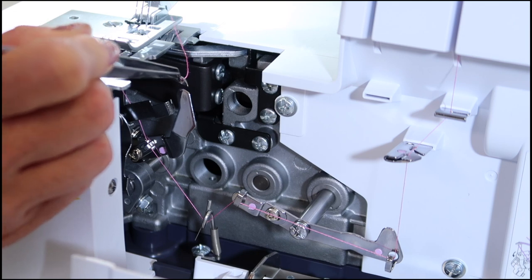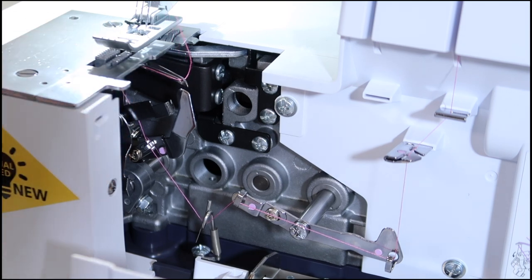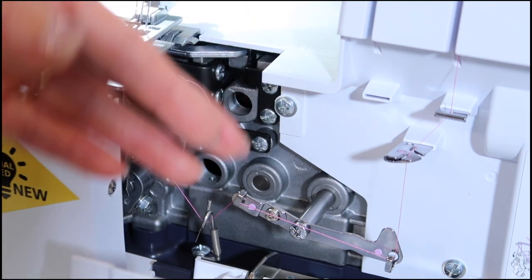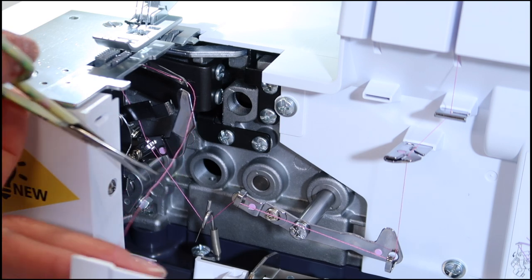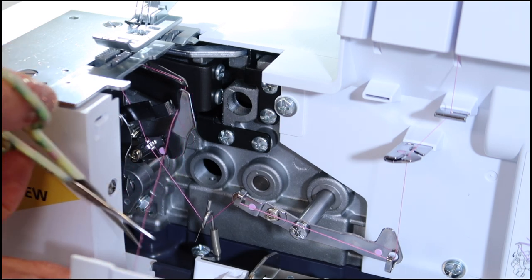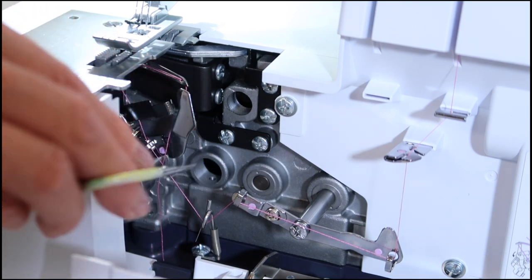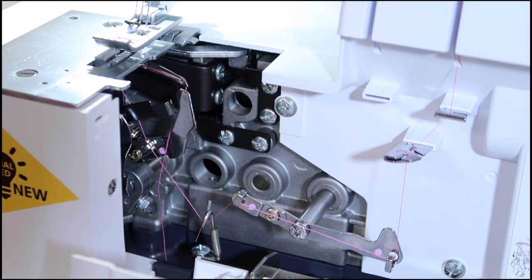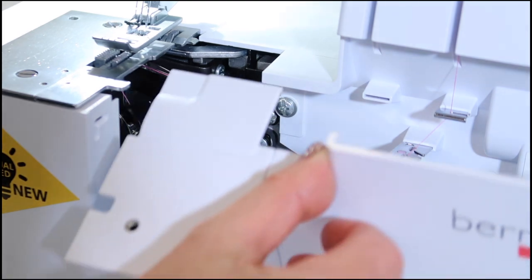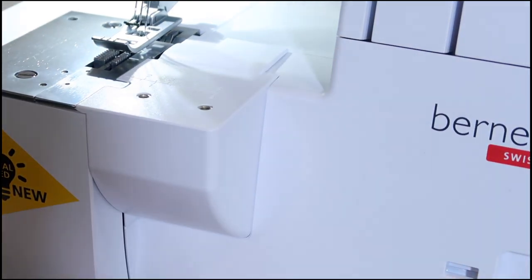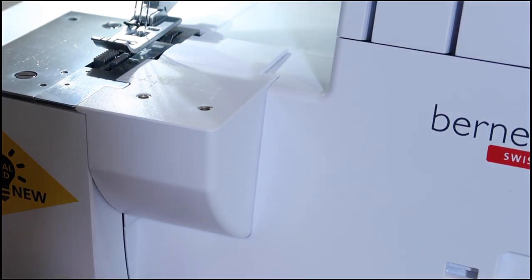You know you did it right when the thread lays in this groove here. Now, here's the part you're going to love. When you're done doing a cover stitch looper, all you need to do is leave yourself all three, four inches of tail of the thread, and just let it dangle right here. Don't even worry about where it is, and close the door. Don't even think about it, because it's going to come up when we take our first stitch.